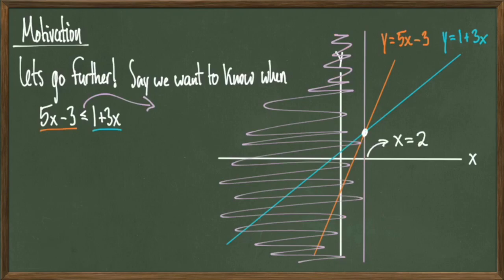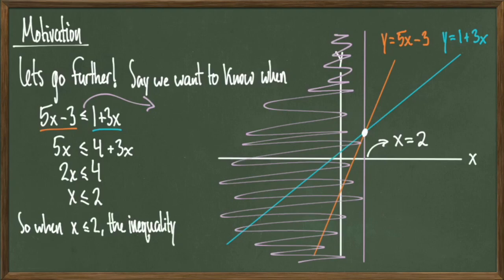And if I proceed further, I can actually solve this linear inequality using the exact same methods I would use as if I was solving a linear equation. The inequality sign is preserved throughout, so I end up with a solution of x less than or equal to 2. And this seems to agree with my picture.